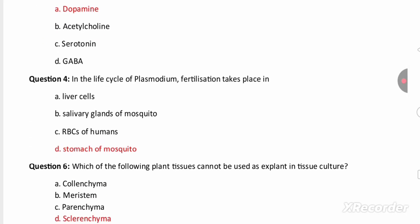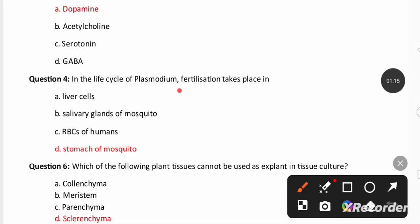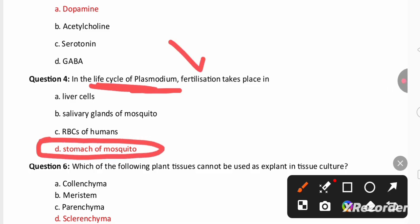Then the fourth question also from the chapter human health and disease. So plasmodium is the protozoa which cause malaria and in the life cycle of plasmodium fertilization usually takes place in the stomach of the mosquito.